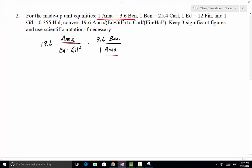And then we need to cancel out Ben as well so we can get Carl. Therefore from the second equality we're going to write 25.4 Carl over 1 Ben. This way Ben can be cancelled out as well.